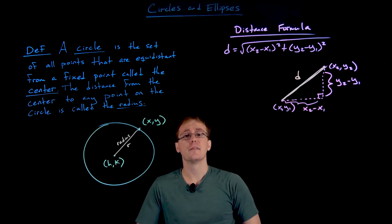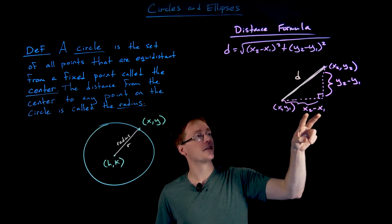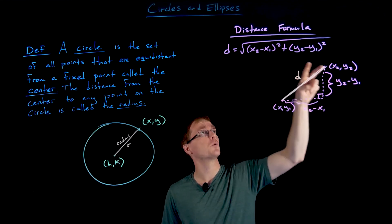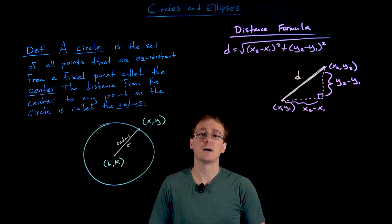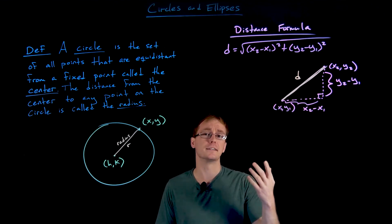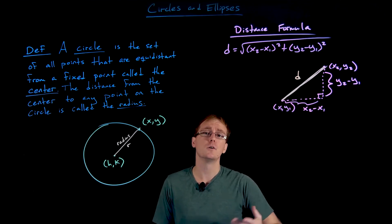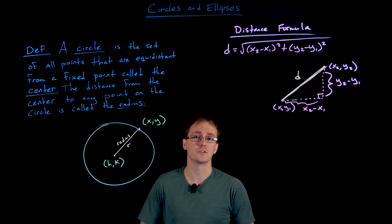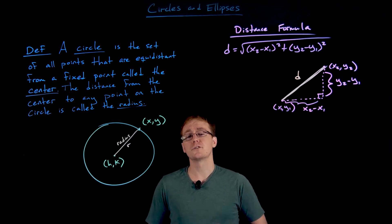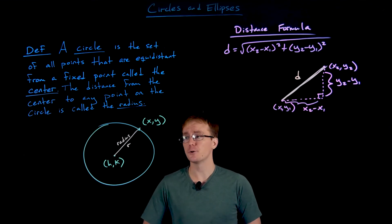In the Pythagorean theorem, the quantity (x₂ − x₁)² plus (y₂ − y₁)² equals d². We just take the square root of both sides and take the positive solution, because distance is always going to be a positive number. So the distance formula is an important part of deriving the equation of a circle.